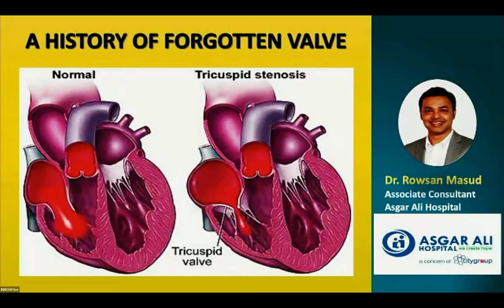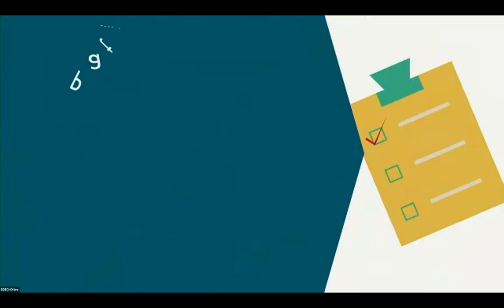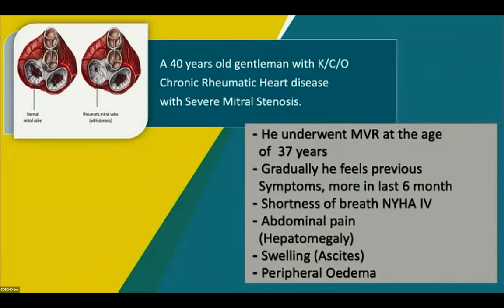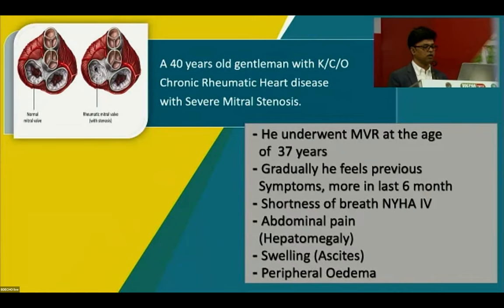Good afternoon. I am Dr. Mahmad Roshan Masud. My case is titled 'A History of a Forgotten Valve — or perhaps a Neglected Valve.' A 40-year-old gentleman with known chronic rheumatic heart disease and severe mitral stenosis underwent mitral valve replacement at age 37. Over the last six months he developed worsening shortness of breath (Grade 4), abdominal pain, hepatomegaly, ascites, and peripheral edema. Two months ago he developed acute shortness of breath requiring mechanical ventilation, and unfortunately died after a couple of days.